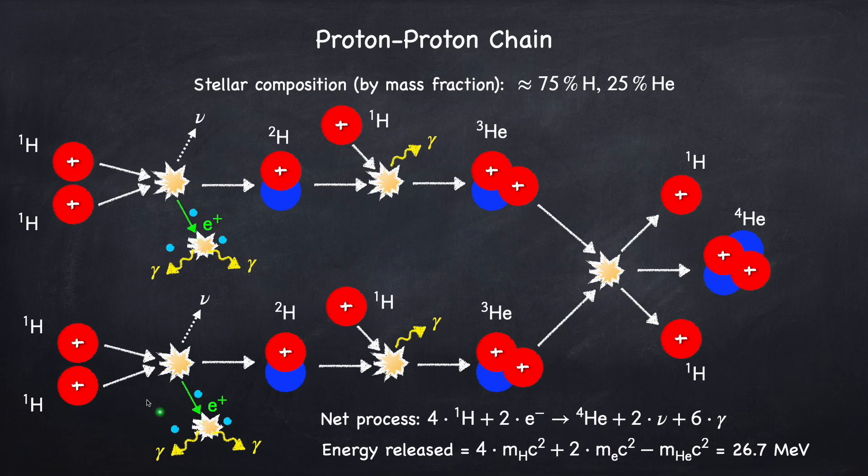So the way this works is, you start off with two protons here. They come together and fuse into an H2 nucleus, otherwise called a deuteron.